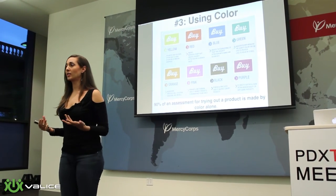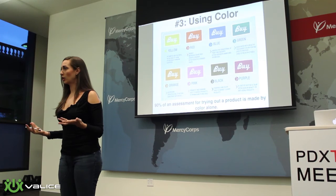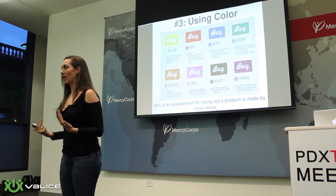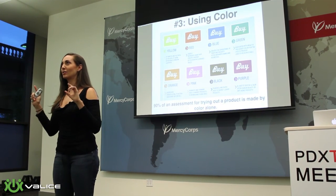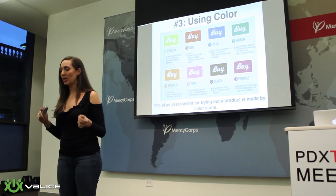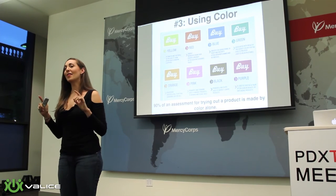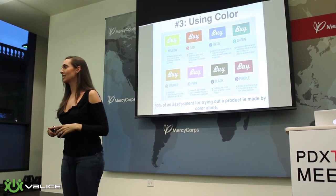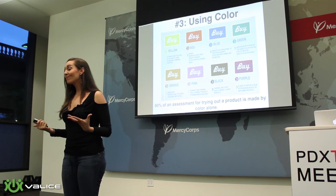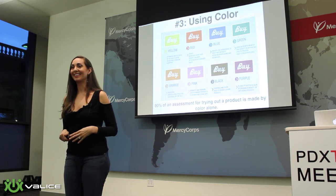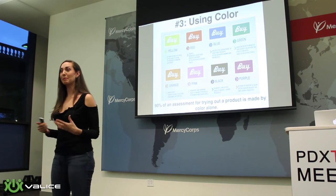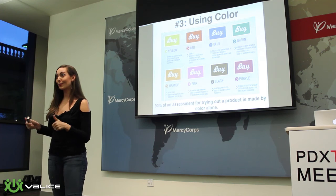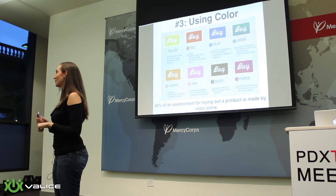Blue is the most trusting, loyal color — people feel very calm with it. There's a study done at Creighton University that found people make fewer typos in blue offices. So if you're doing something like a programming environment, blue is a good choice — you don't want people making typos.